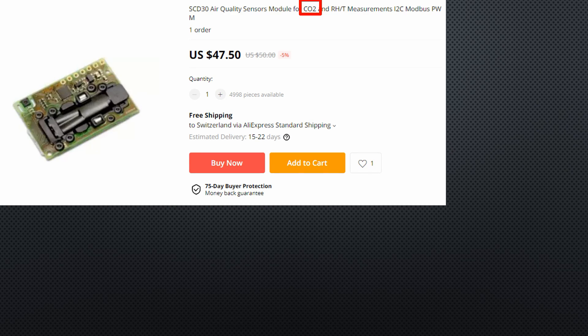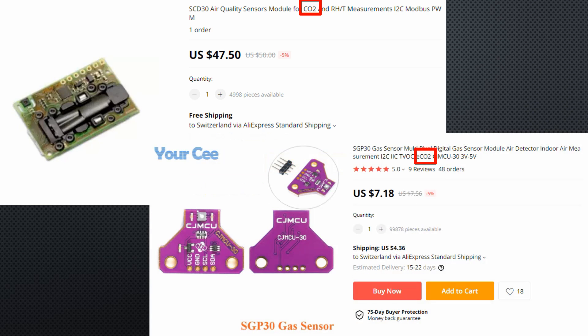The first is the price. Real CO2 sensors are much more expensive than eCO2 sensors. eCO2 sensors measure different gases emitted by humans. And the theory goes that they can be used instead of the more expensive CO2 sensors.